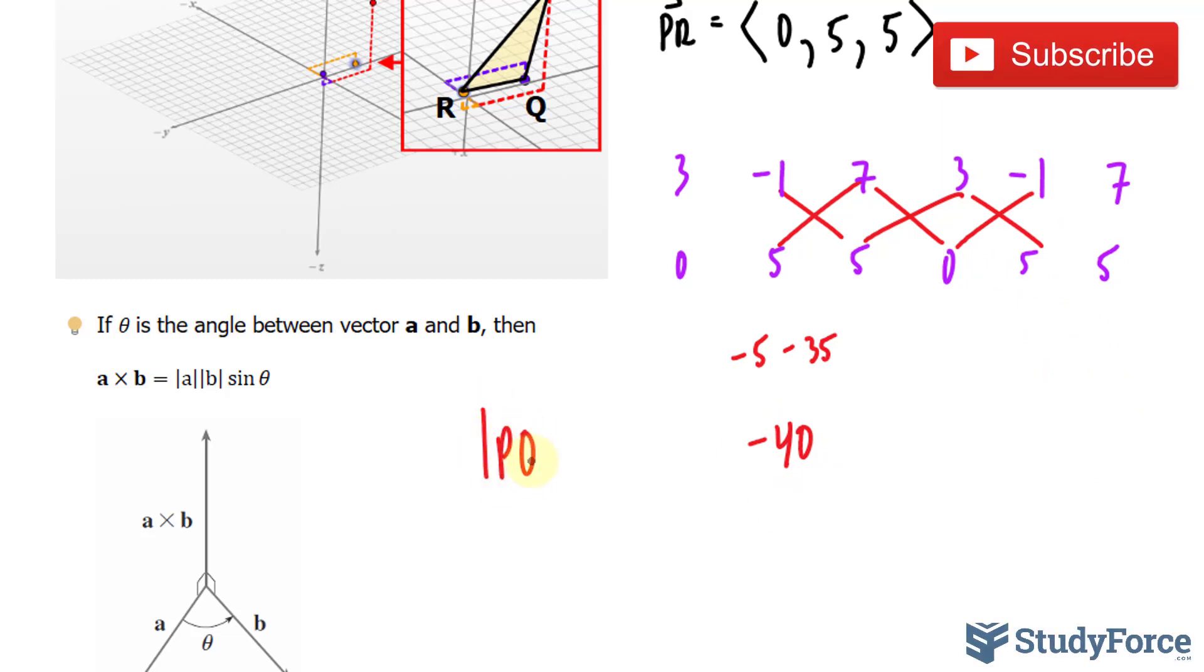And that actually represents the X component of the cross product. So we have the cross product of PQ times PR. Another word for cross product is vector product. So in case you aren't familiar with cross product, it's also referred to as that.